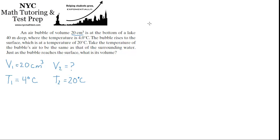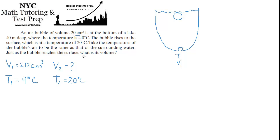Let's draw a picture. We have a lake filled with water, with a bubble at the bottom at T1 and V1, which we know. It rises and expands in volume to the top — the bubble is going to expand rather than contract. At the top we know T2 but not V2; that's what we're after.